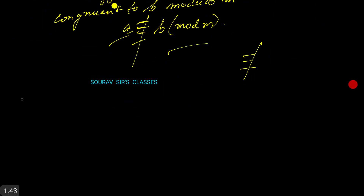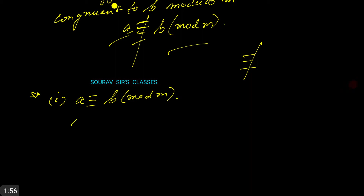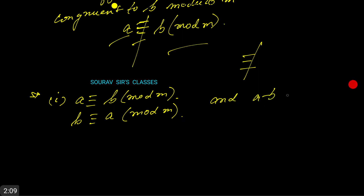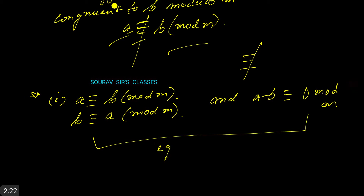Let us do a few theorems on this, very elementary theorems. Number 1: a ≡ b (mod m), b ≡ a (mod m), and a − b ≡ 0 (mod m). These three are equivalent statements.